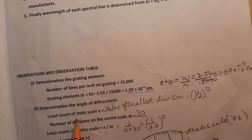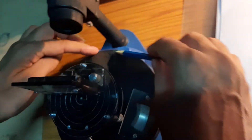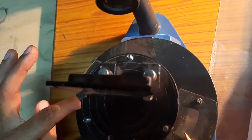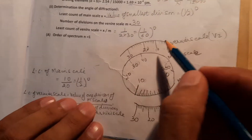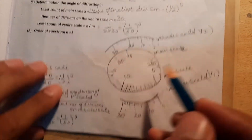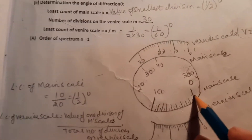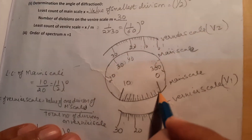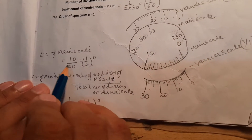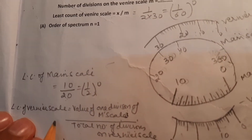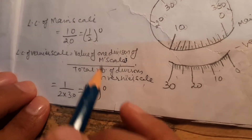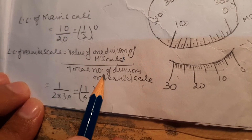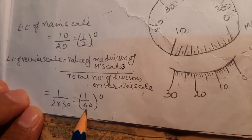Now we will find out the least count of the main scale. On the main scale, there are markings at 0, 10, 20, 30, 40, and between 0 and 10 there are 20 divisions, so the least count of the main scale is 10/20 = 0.5 degrees. The least count of the vernier scale equals the value of one main scale division divided by total number of vernier divisions: 0.5 degrees divided by 30 equals 1/60 degree.